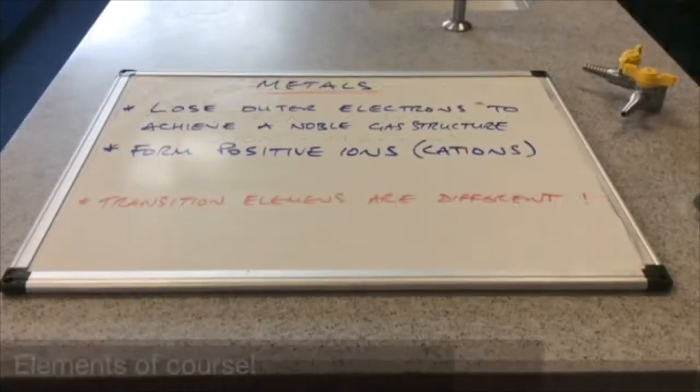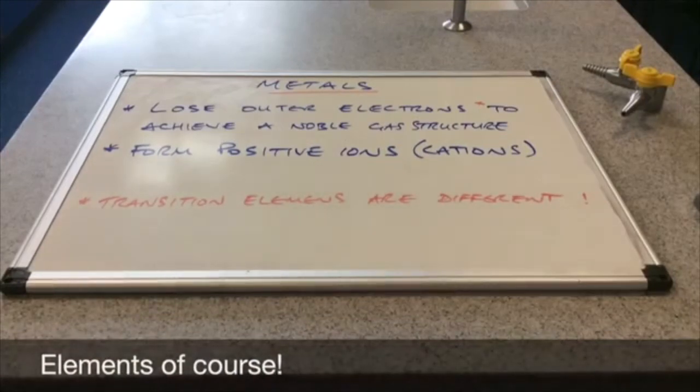So we'll start by looking at the metals and what they do in terms of electrons. There's a couple of facts there for you. Metals always lose their outer electrons. And most of them do that to achieve a noble gas structure. And that's what you're taught at GCSE.